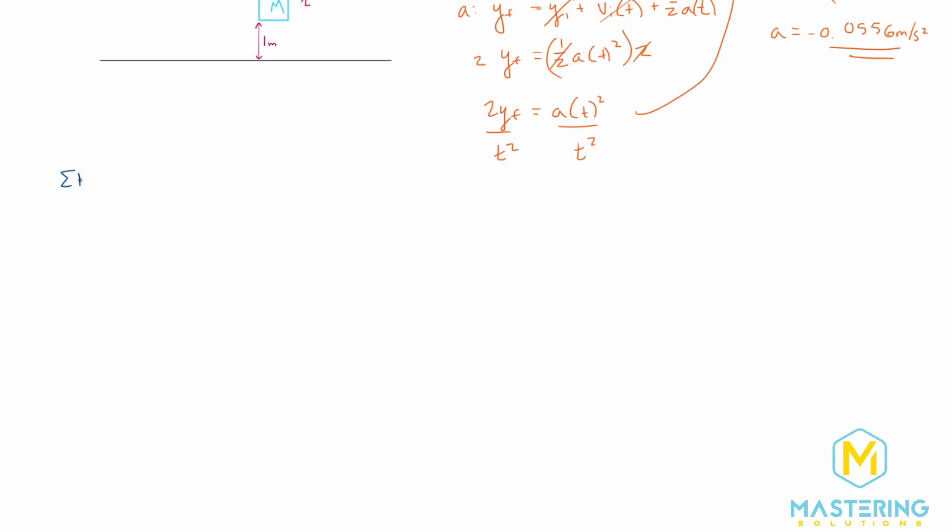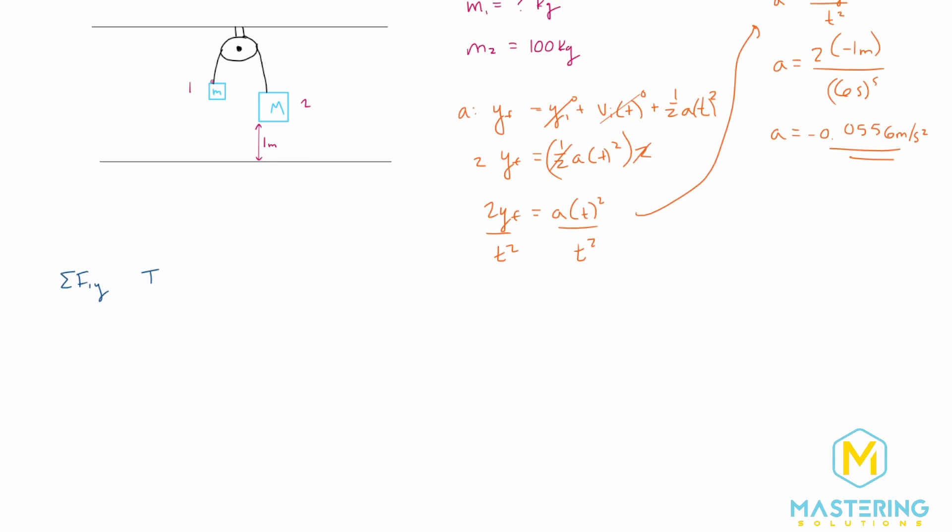So if we sum the forces for block 1, it's only going to be in the y direction, obviously. And so we have t1, because we have the tension going up, and then the tension here for 2. So t1. And then we have the weight of both of them coming down. So tension 1 minus mass of 1 times gravity is equal to mass of 1 times acceleration 1.